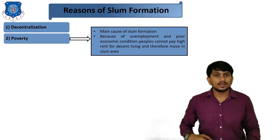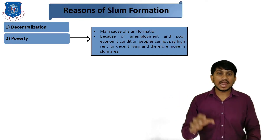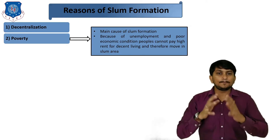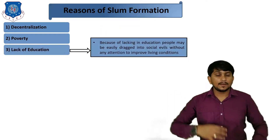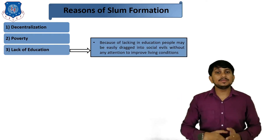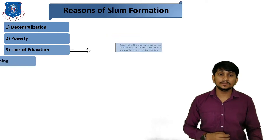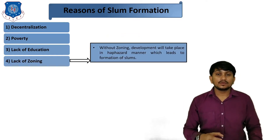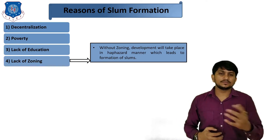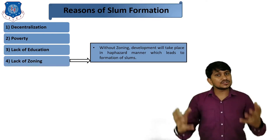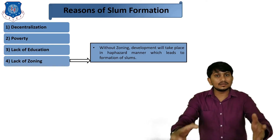Second is poverty. The main cause of slum formation is poverty. Because of under-employment and poor economic conditions, people cannot pay higher rent for decent living and therefore move into slum areas. Third is lack of education — people may be easily dragged into structural evils without attention to improving living conditions. Fourth is lack of zoning. Without zoning, development takes place in an uncontrolled manner, which leads to formation of slums. Someone can set up industries next to your house or easily create slums in the town.